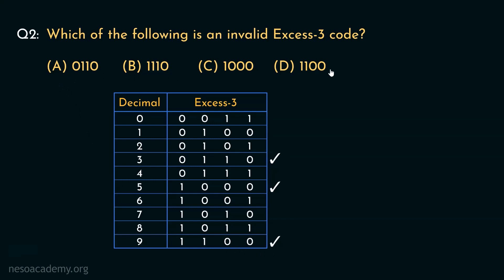Now since we have judged all the options and based on our findings, we can clearly say that option B is the correct choice for this particular question. There is another shortcut: XS3 codes, although non-weighted, are sequential. For the encoding of 0 we use the encoding of 3, that is 0011 from 8421. Afterwards everything is sequential. So for 9 we will have 1100, that is the encoding of 12 in unsigned numbers. So anything bigger than 1100 and anything lesser than 0011 will be an invalid XS3 code.